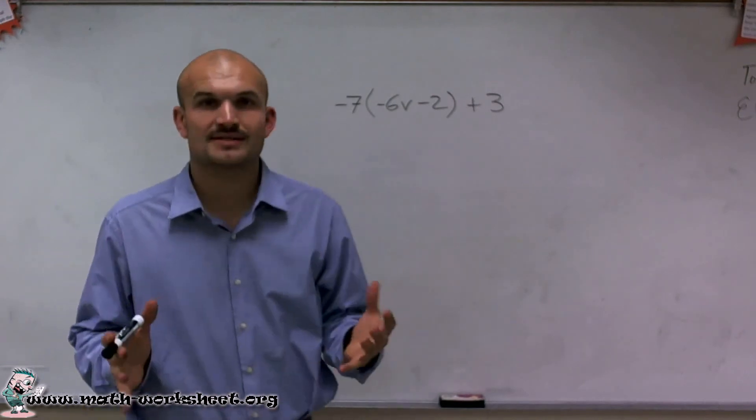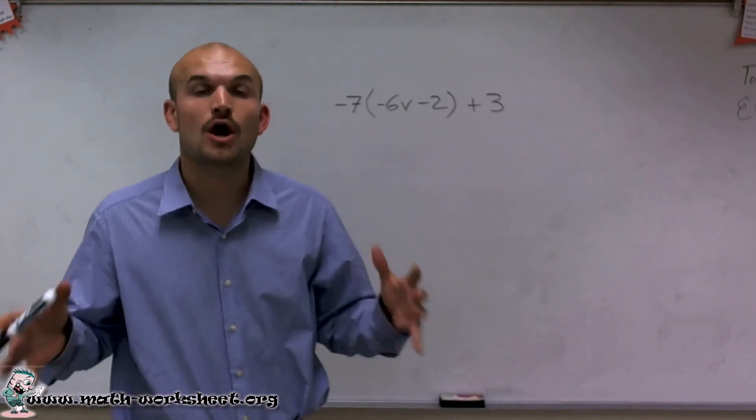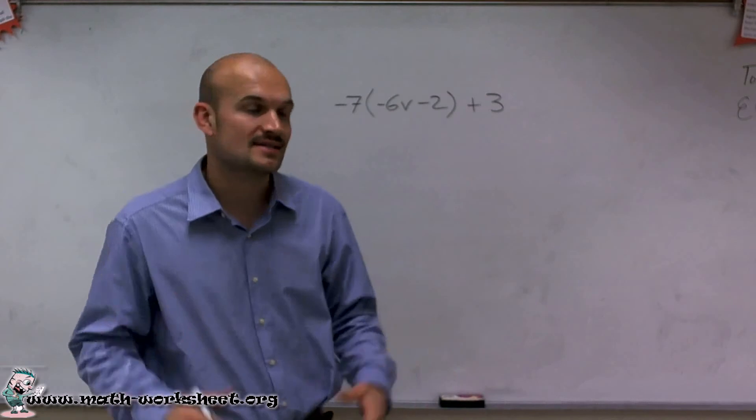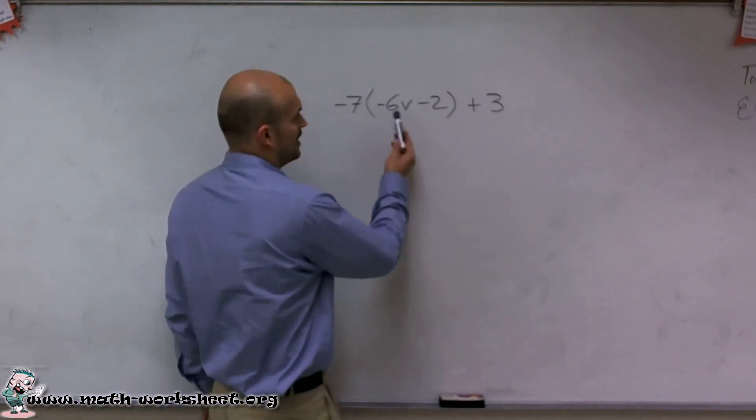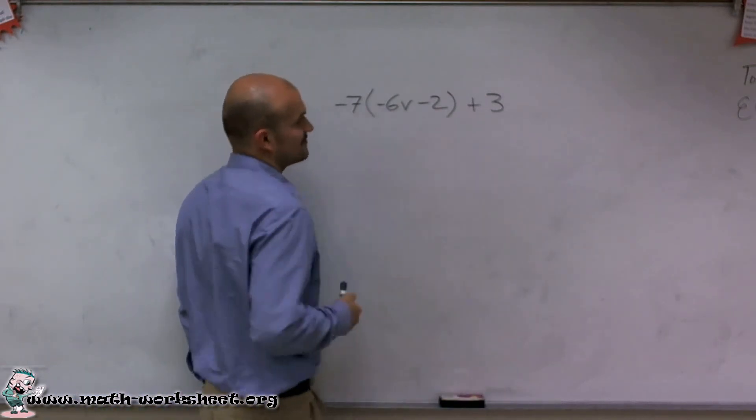When looking at this expression, when I see parentheses, I automatically think order of operations. Always, I want to see, can I simplify inside the parentheses? Inside my parentheses, I have negative 6v minus 2.